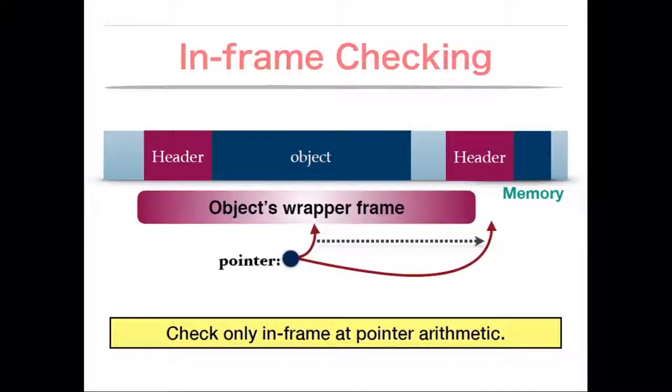But in the case of Framer, we don't pad. We just don't do anything because we can pad imaginary bytes. When we determine object wrapper frame, because even if it is out-of-bound, it's still within the wrapper frame, so we can just derive the address. We can derive the address of the base address of the wrapper frame and then we can get the location of the header. So we don't do anything at pointer arithmetic.